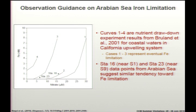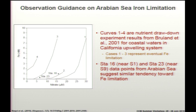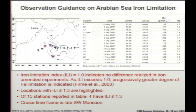This graphic is from a Naqvi et al. paper. Jim mentioned the Bruland work off California in the upwelling system. These cases one, two, and three are drawdown experiments showing you run out of iron while nitrate is still there. The two data points from Arabian Sea cruises that Wajit and Jim participated on reflect this same scenario — iron runs out first. Station 16 is very near that S1 coastal station highlighted in the previous slide.